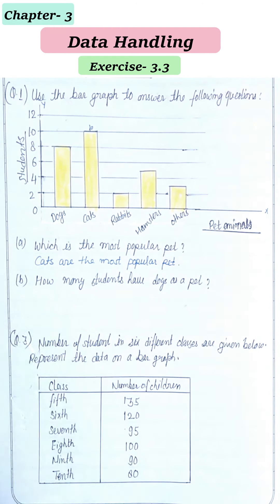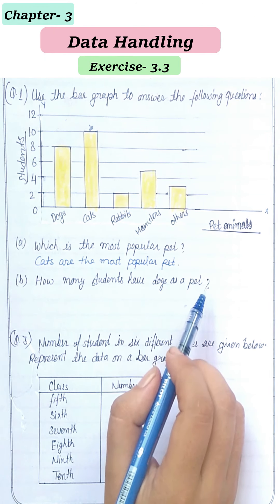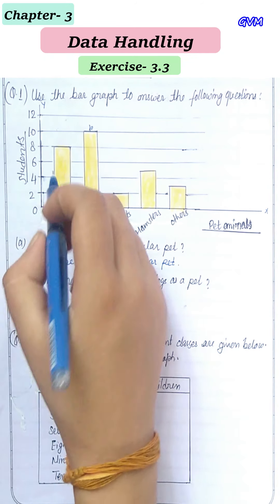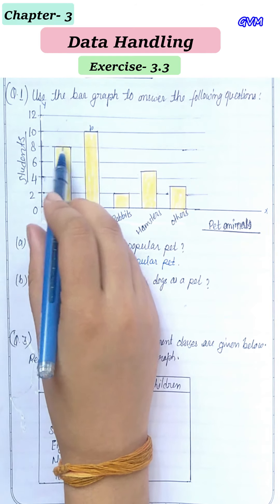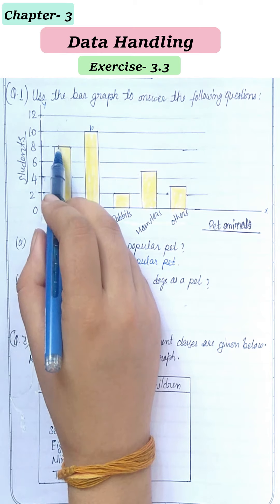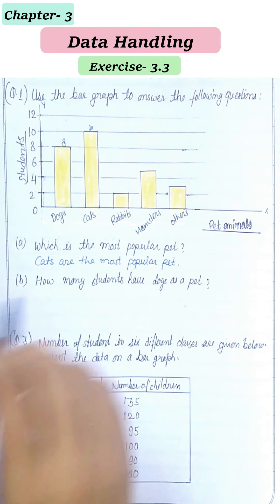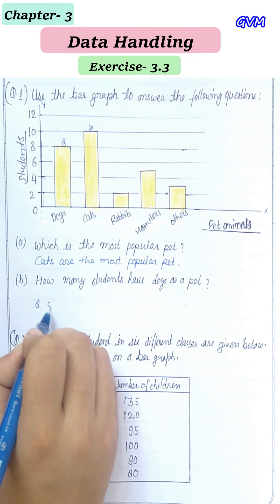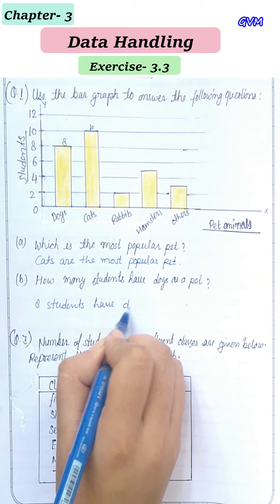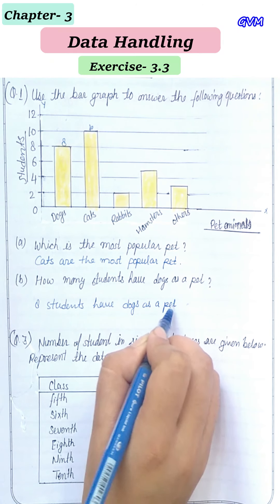Part (b) asks how many students have dogs as a pet. We can see that the first bar represents dogs, and it goes up to 8. So 8 students have dogs as a pet.